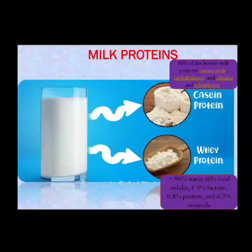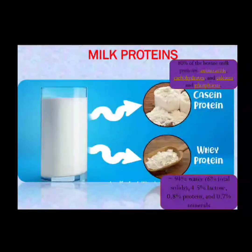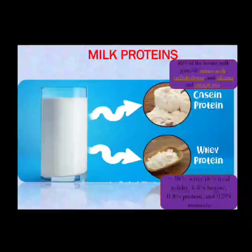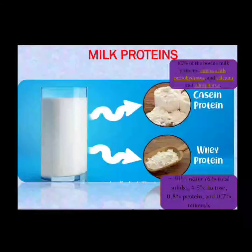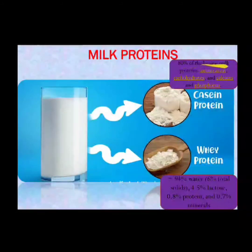Moving on to milk proteins, these can be categorized into two types: casein protein and whey protein. When milk acidifies — that is, when the acid content increases or the pH decreases — the milk protein starts coagulating and water separates out. The coagulated part is called casein protein, and the water that separates out contains the whey protein.